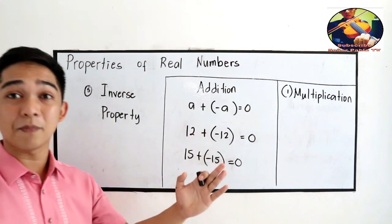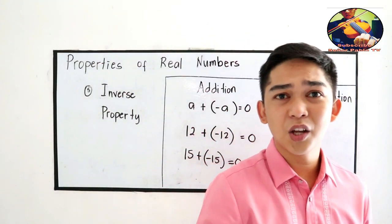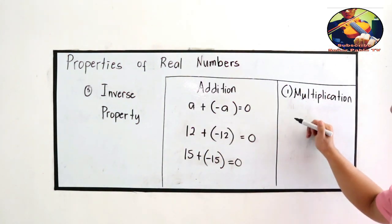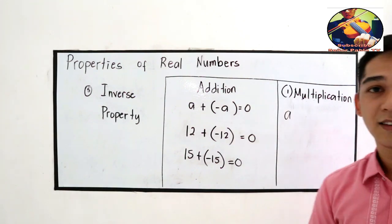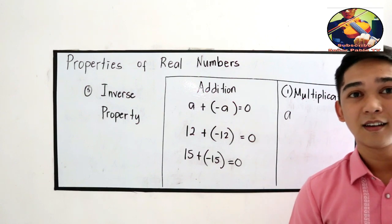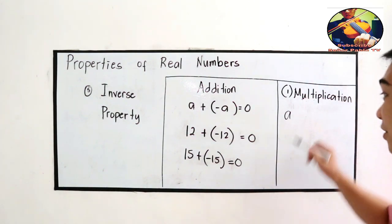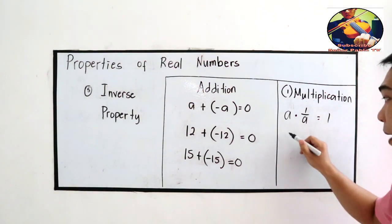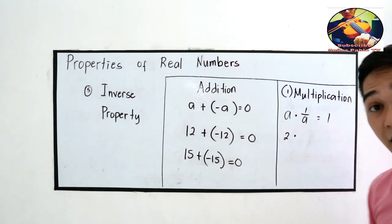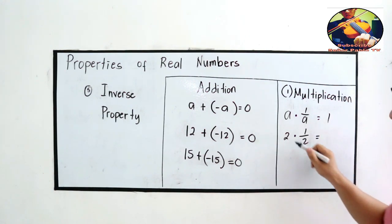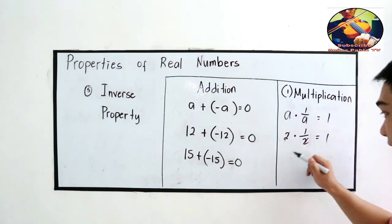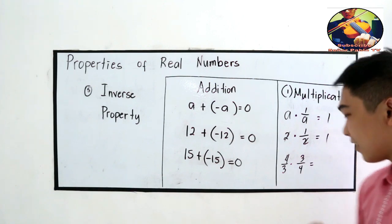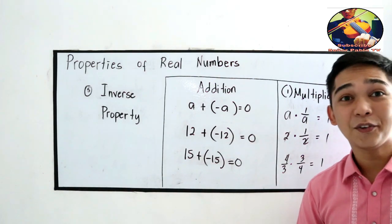For the inverse property of multiplication, what do you multiply a number by so that the product equals 1? You use its reciprocal. So A times (1/A) equals 1. For example, 2 times 1/2 equals 1, and 4/3 times 3/4 equals 1. That is the inverse property.